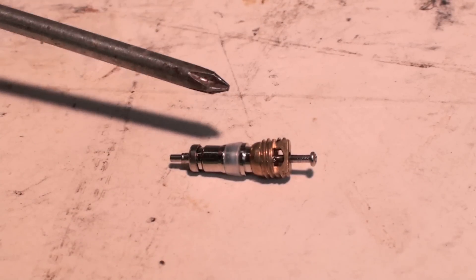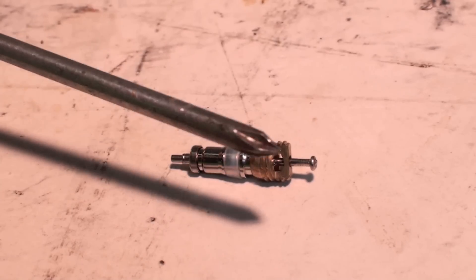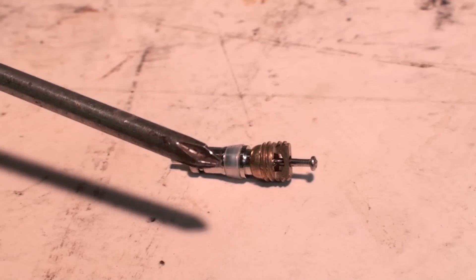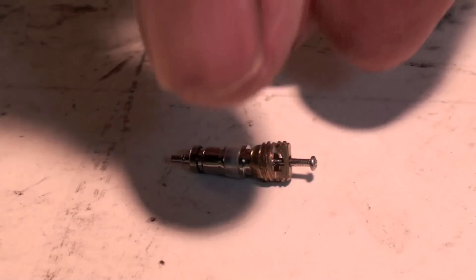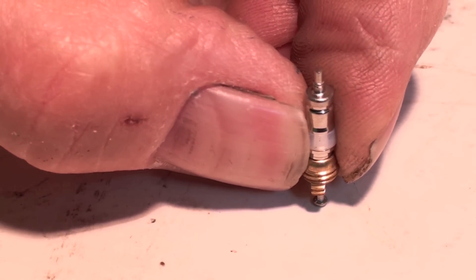You can see this little gasket right there. When this is tightened down, that gasket seals with the orifice it comes out of and I'll see if I can show you how it actuates.